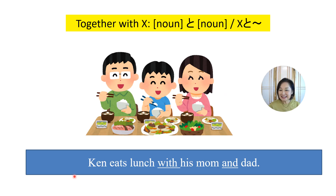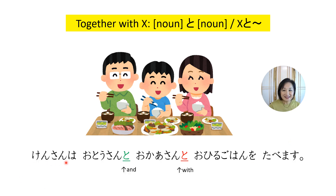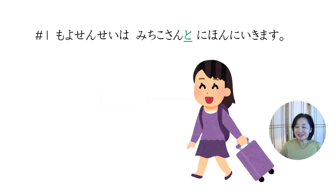Let's make another sentence: 'Ken eats lunch with his mom and dad.' This sentence has both 'with' and 'and,' so your Japanese sentence should have two particle と with different functions. ケンさんはお父さんとお母さんとお昼ご飯を食べます。